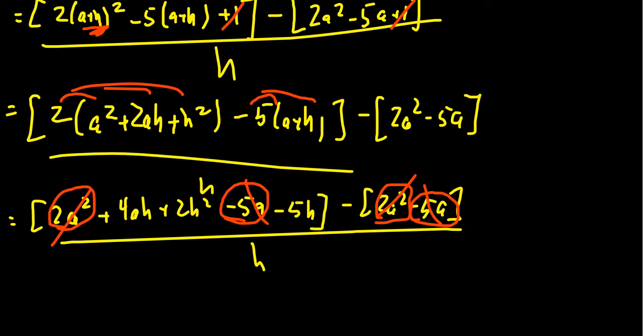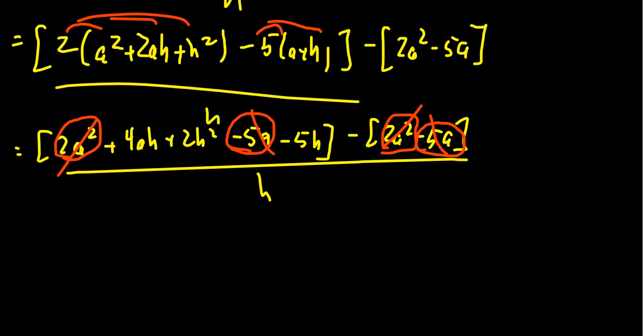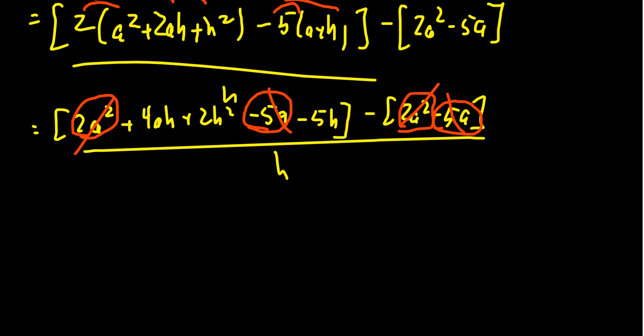You're going to notice that oftentimes college algebra very much is a cancel culture. We're always trying to cancel everyone. When we look at who survives the massacre, which we call the numerator, you're going to have 4ah + 2h² - 5h in the numerator. This is all over h, of course.